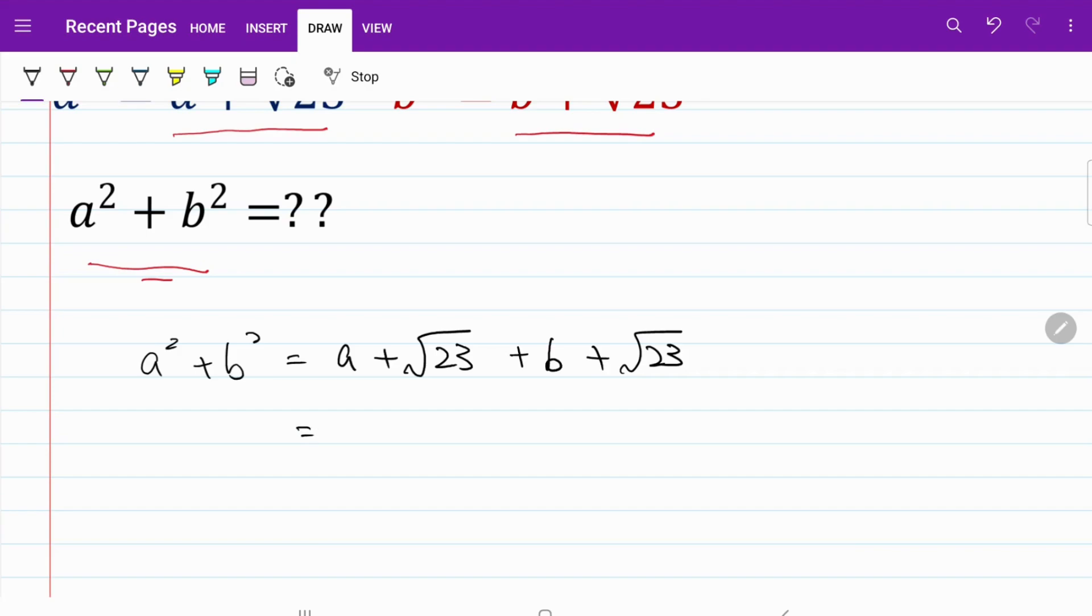From here, I can rearrange the equation to where a² + b² = a + b + 2√23.